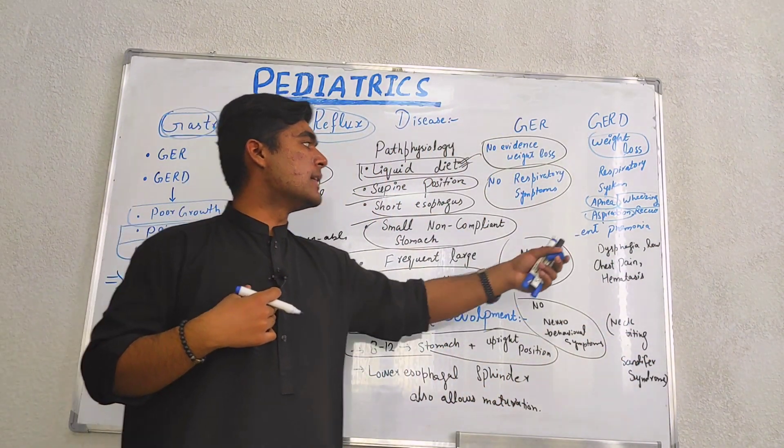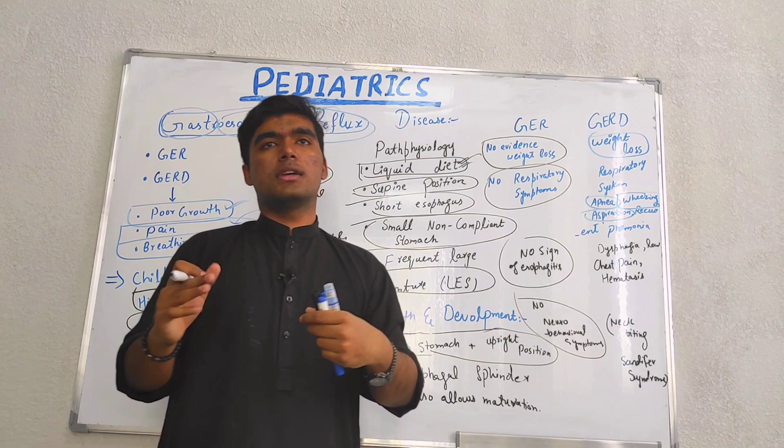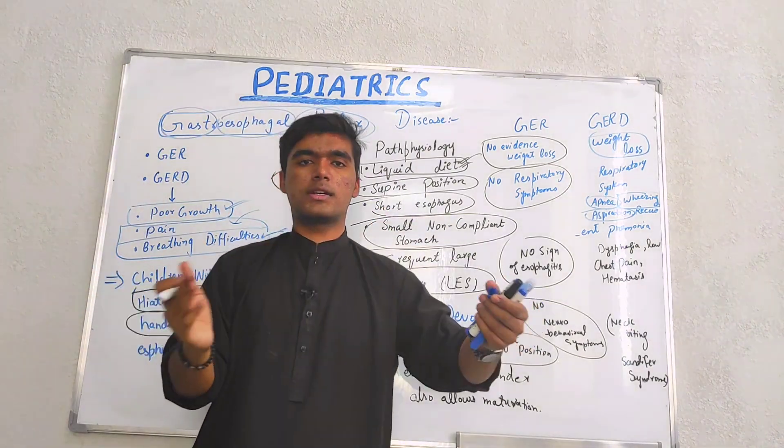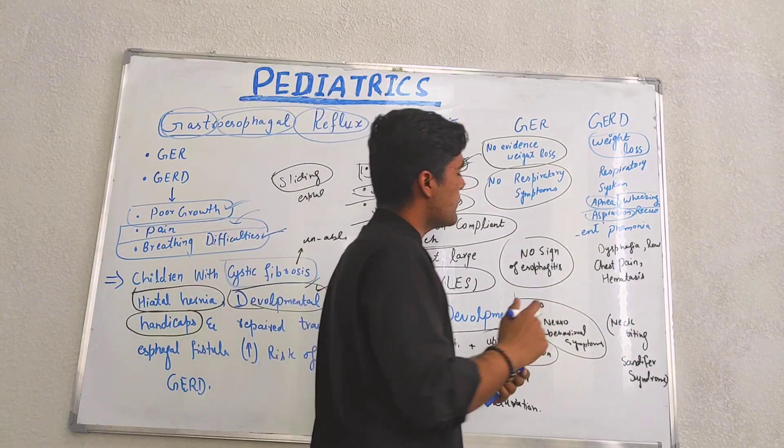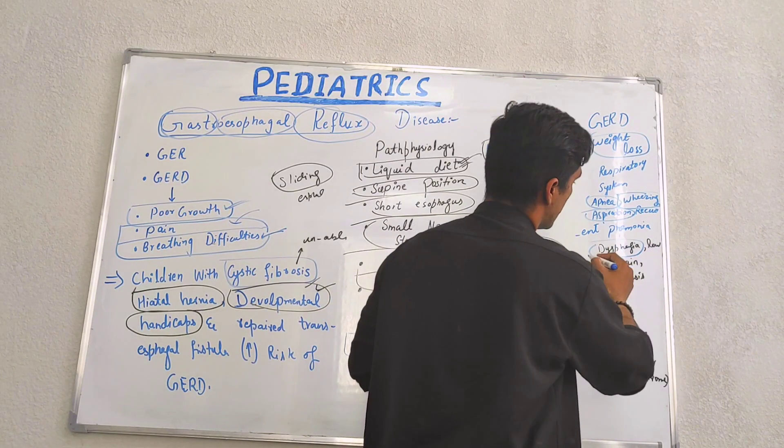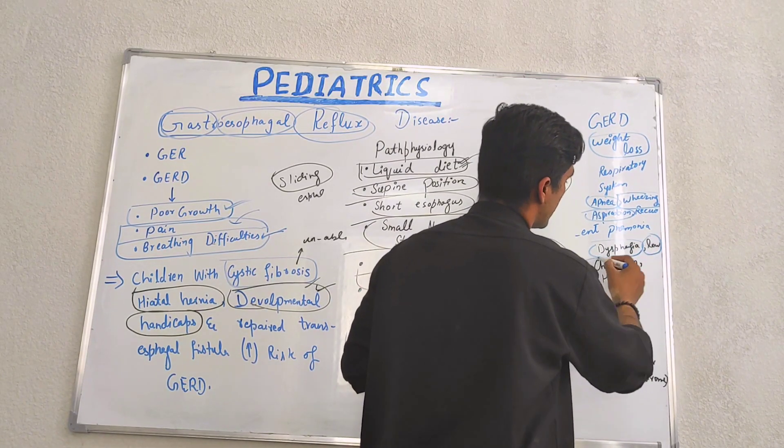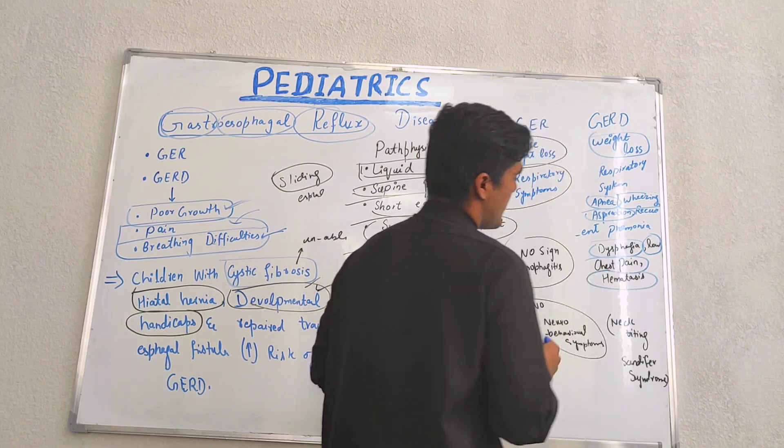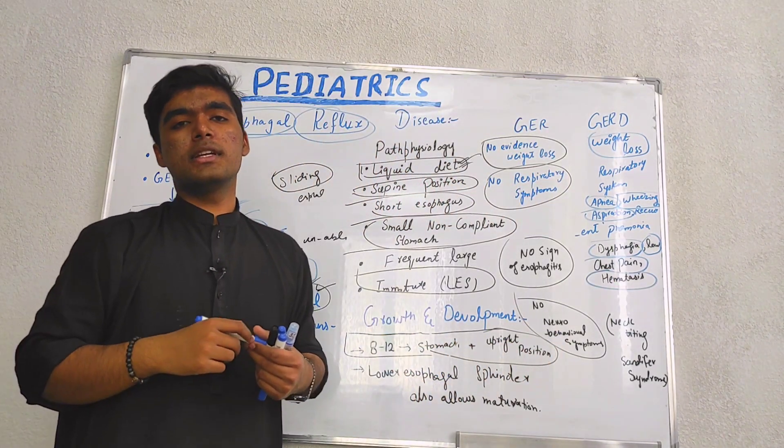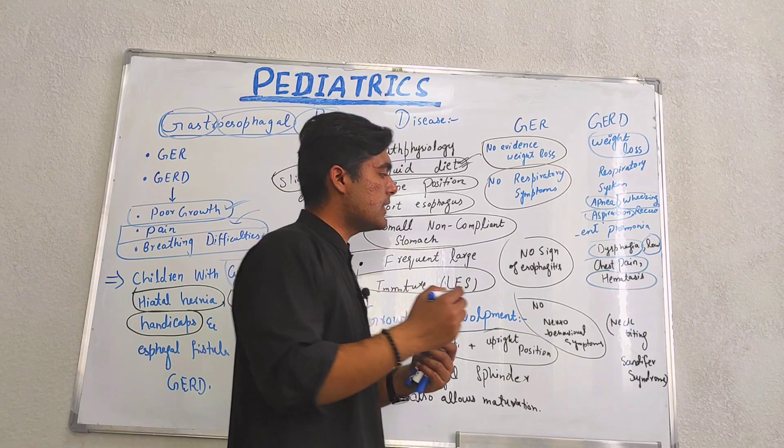Recurrent pneumonia—with passage of time, pneumonia occurs recurrently. In the same way, signs of esophagitis include dysphagia (difficulty in swallowing), lower chest pain, hematemesis (bleeding in vomiting).